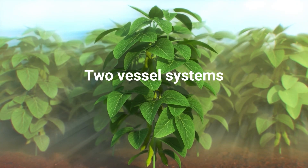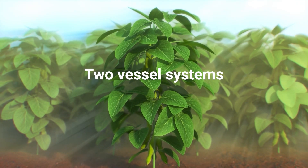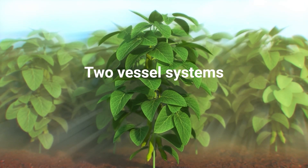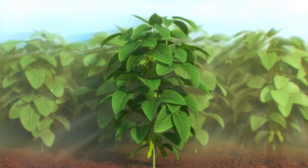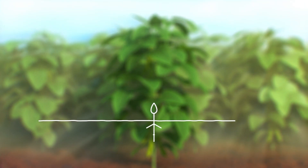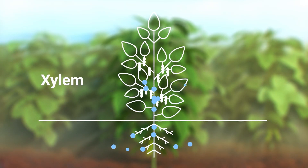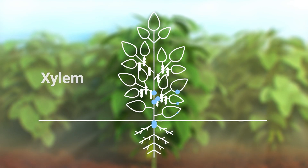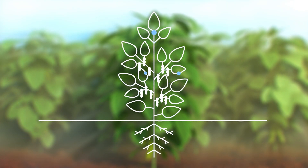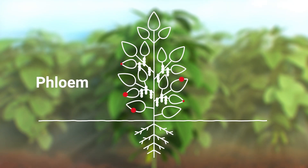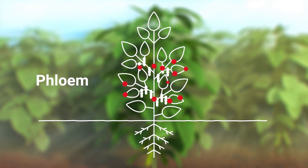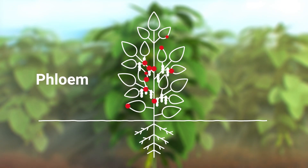Most nutrients that are needed by the plant are taken up via the roots from the soil. There are two different vessel systems that transport nutrients within the plant: the xylem vessels and the phloem vessels. The xylem vessels transport water and dissolved nutrients from the roots up to the leaves. Phloem vessels transport sucrose, amino acids and nutrients between different parts of the plant.